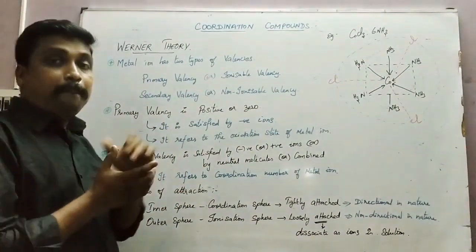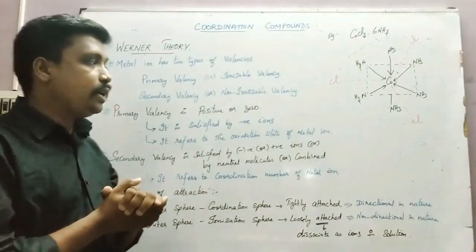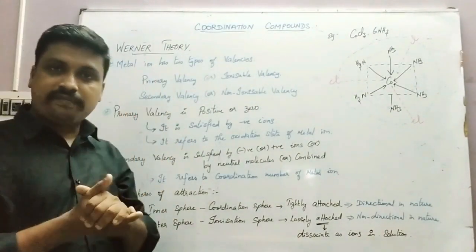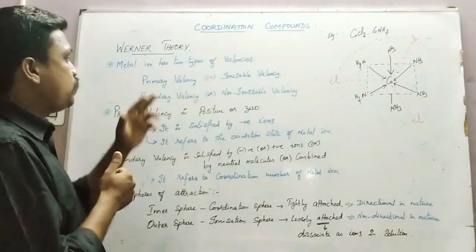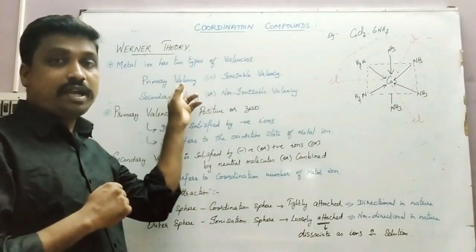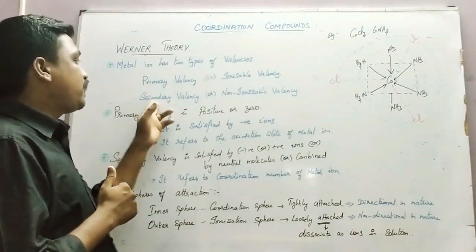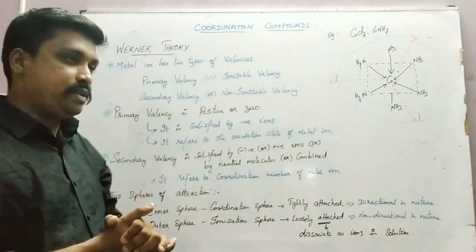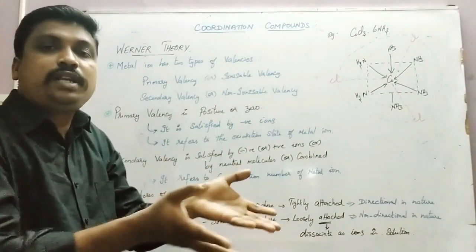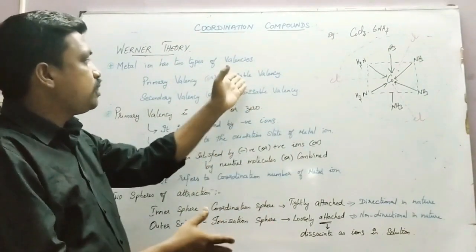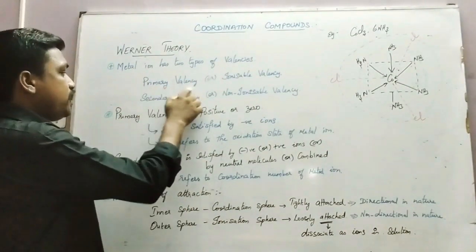a metal ion has two types of valences. The first one is called Primary Valency or Ionizable Valency, and the other one is Secondary Valency or Non-Ionizable Valency. Ionizable means it can be dissociated into ions in water — that is called Primary Valency.